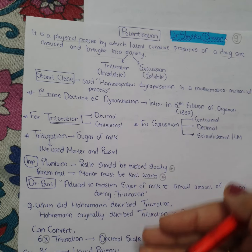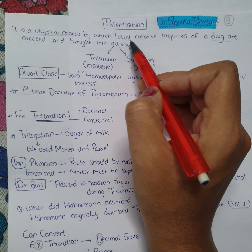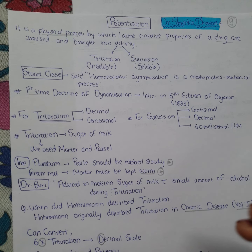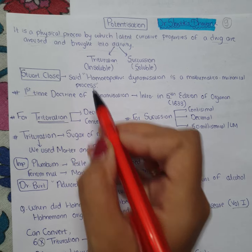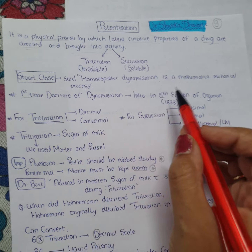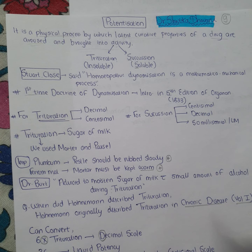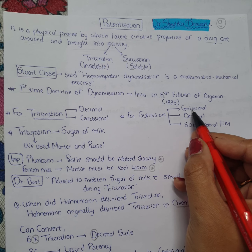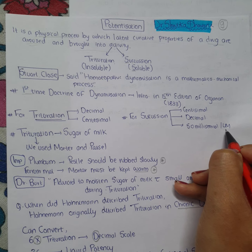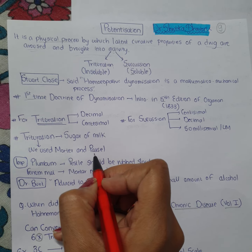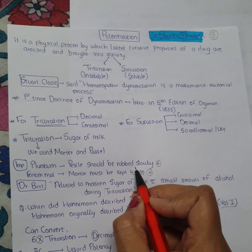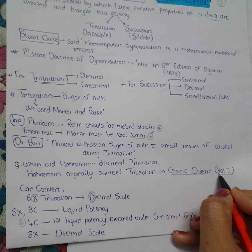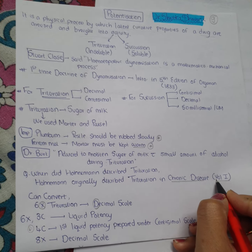To summarize: potentization ki definition seekhi. Trituration insoluble ke liye, succussion soluble ke liye. Stuart Close ne kaha dynamization is a mathematical mechanical process. Dr. Bert ne sugar of milk ko alcohol se moisten karne ki advice di. Doctrine of dynamization fifth edition of Organon mein 1833 mein introduce hua. Trituration mein 2 scales (decimal and centesimal), succussion mein 3 scales (centesimal, decimal, 50 millisimal/LM). Sugar of milk ke liye mortar and pestle. Hahnemann ne trituration Chronic Diseases Volume 1 mein describe kiya tha.